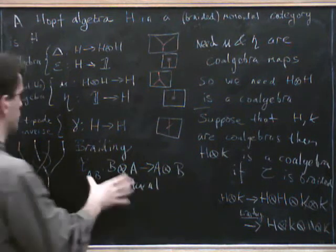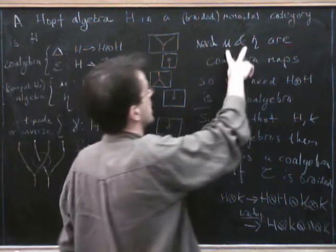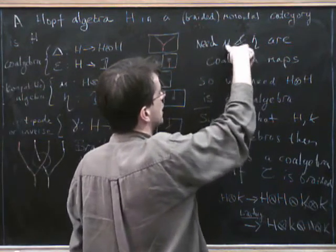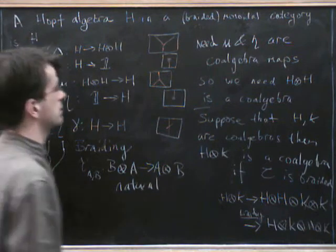Anyway, so the point was, what was the point? So where on earth was I? So if we think back, we were needing to show that these are co-algebra maps. So mu and eta had to be co-algebra maps.